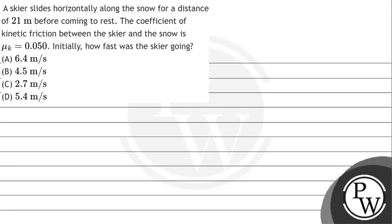Hello, let's read the given question. The question says a skier slides horizontally along the snow for a distance of 21 meters before coming to rest. The coefficient of kinetic friction between the skier and the snow is μ_k equals 0.05.